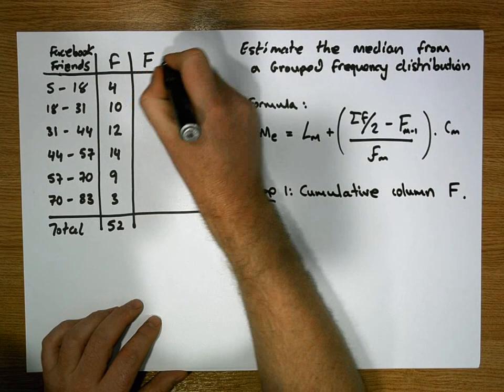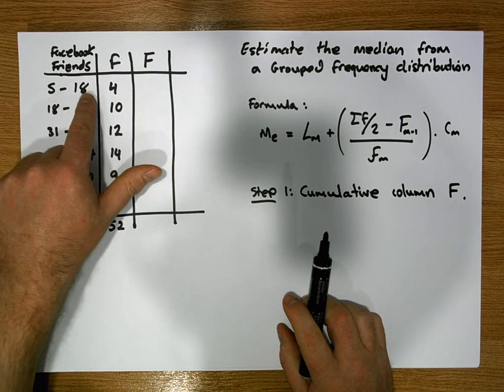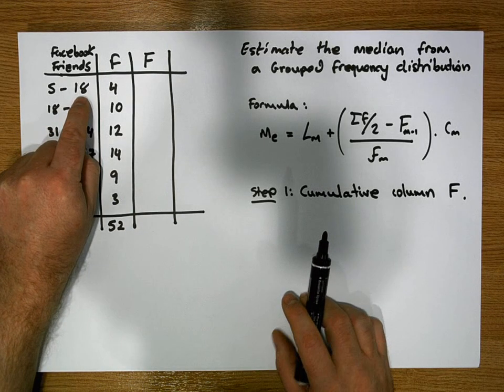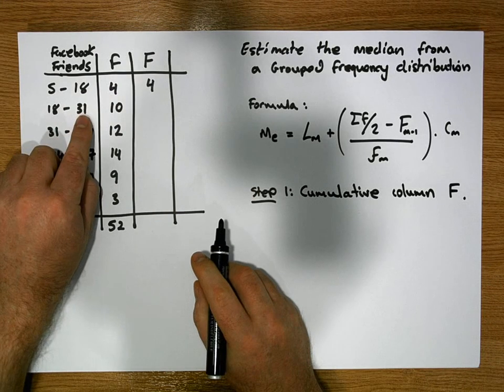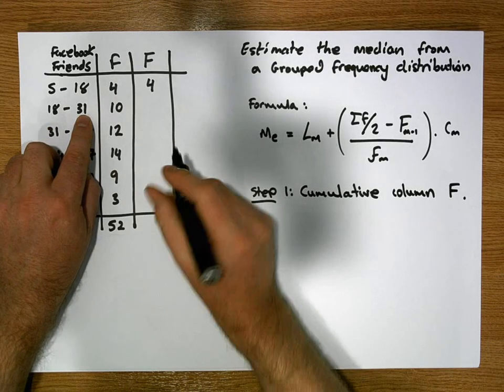The capital F column is an accumulation of our frequencies as we go down through the classes. The question we're asking is: how many observations are less than 18? Well, there's four. How many observations are less than 31? There's the 10 in this class and the previous four, which gives us 14.